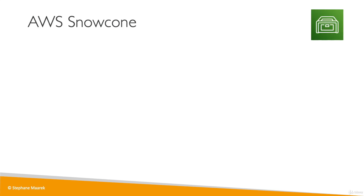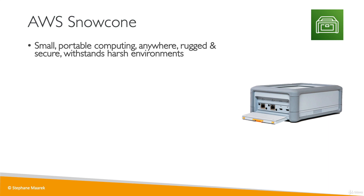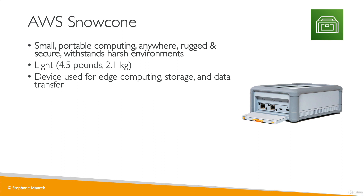The second option is AWS Snowcone — a much smaller device. Snowcone is small, portable, rugged, and secure, and it can withstand harsh environments such as deserts or water. It is used for edge computing, storage, and data transfer, but at a much smaller scale. You can store 8 terabytes on a Snowcone — about 10 times less than the Snowball Edge storage optimized device.